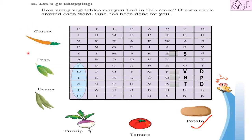First of all, let us read all the names of the vegetables. Carrot, carrot. Next one is peas. Next one is beans, turnip, and tomato. So can you find this word, this vegetable, in this maze?